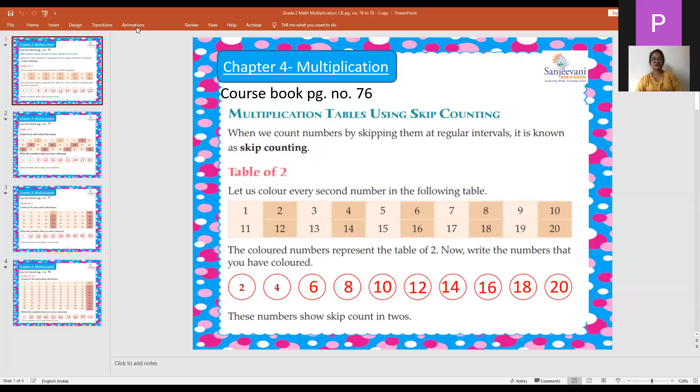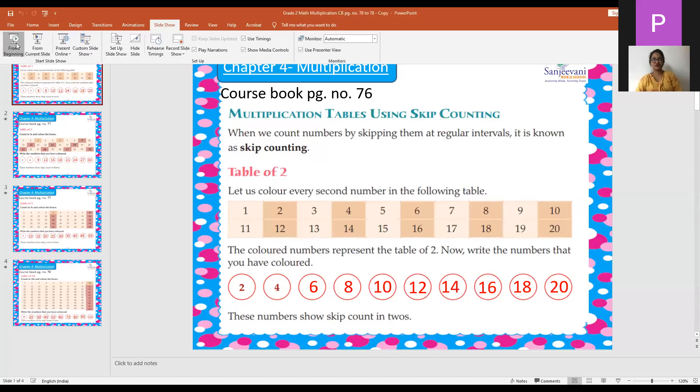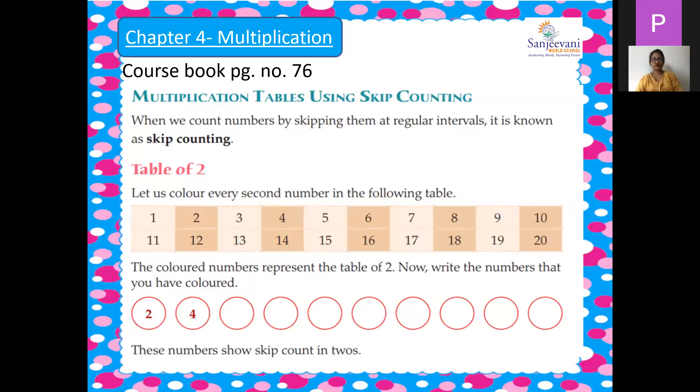So children, open to page number 76 of your course book. As you can see over here, multiplication tables using skip counting. So children, whenever we count the numbers by skipping them at regular intervals, it is known as skip counting.